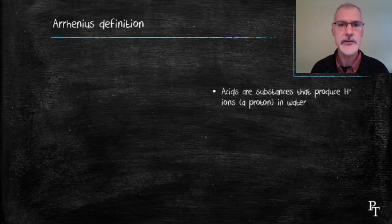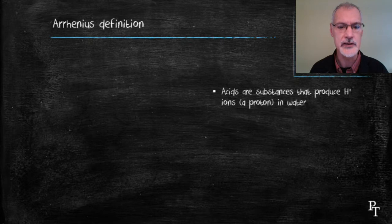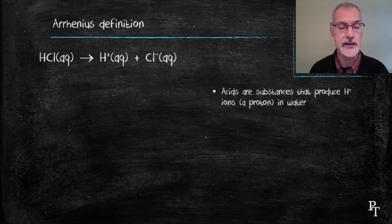He began with the idea that acids are substances that produce hydrogen ions in water. For instance, hydrogen chloride, when dissolved in water, would break apart and form hydrogen ions and chloride ions.